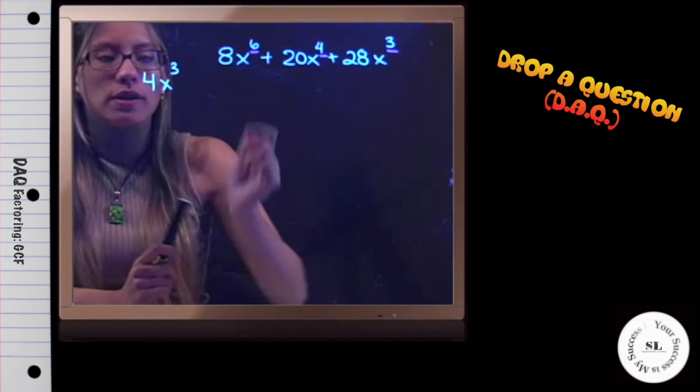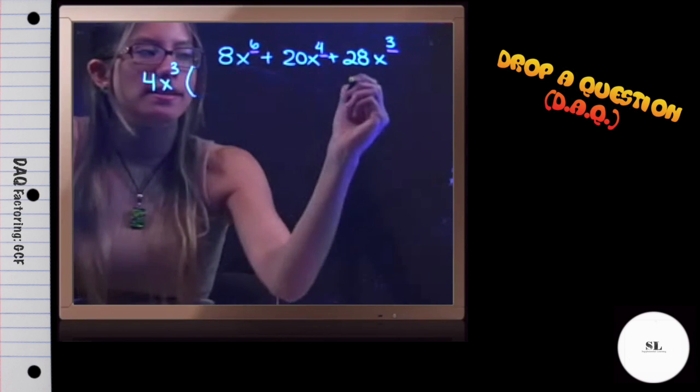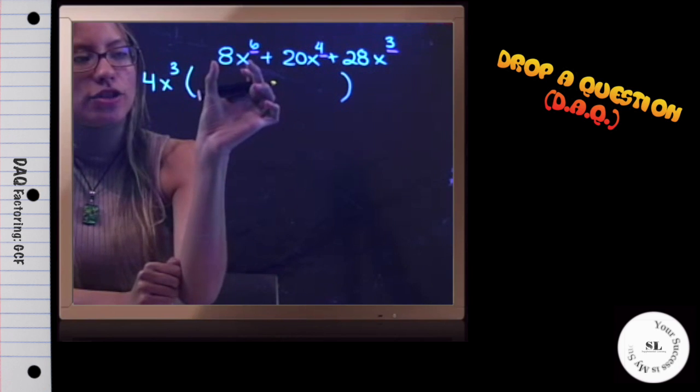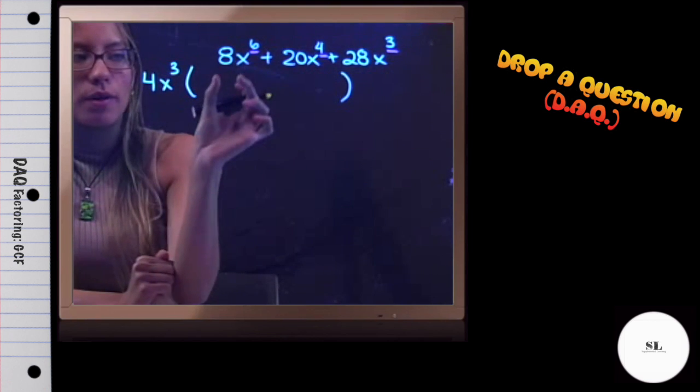Now, once we have our greatest common factor, 4x^3, we write in parentheses what's left over. If you were to divide each term by 4x^3, you would write the remaining for that slot.